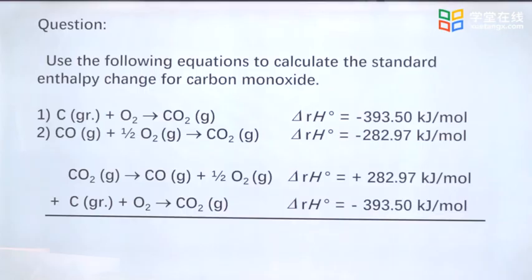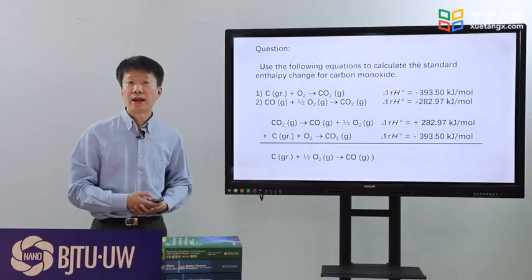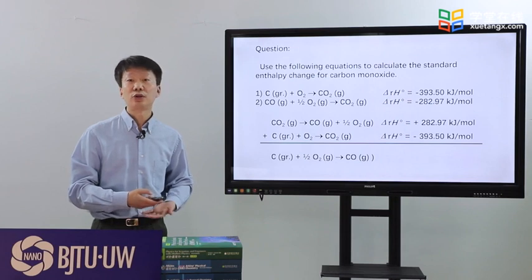After canceling the same terms at both sides of the equation, we have C plus one-half O₂ to CO. And we also have the enthalpy change for this reaction by adding the two enthalpy values of the two equations.